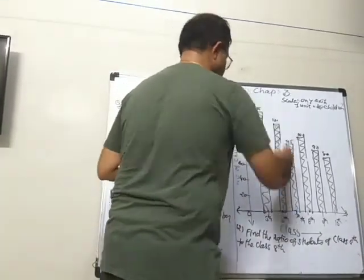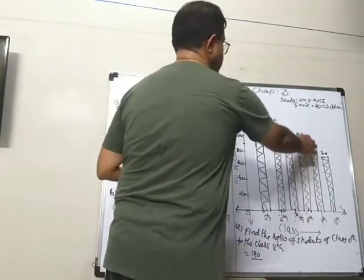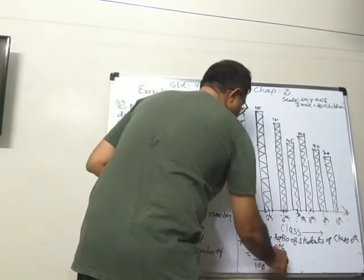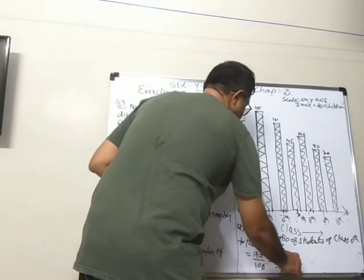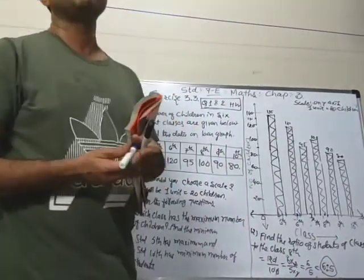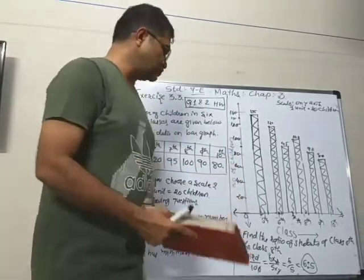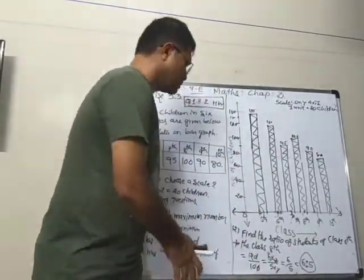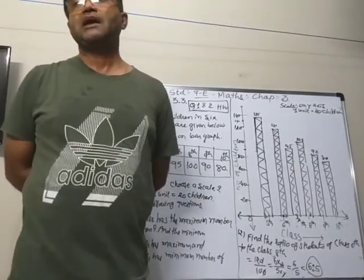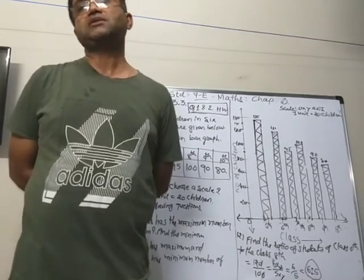The second question says: find the ratio of students of class 6 to class 8. Class 6 has 120 children and class 8 has 100 children, so the ratio is 120 to 100, which simplifies to 6 to 5. That is the ratio between class 6 and class 8 children. Here we finish today's session. A PDF file will follow, and you will draw this graph in your graph book. Any problems, write in the comment section. Thank you very much.